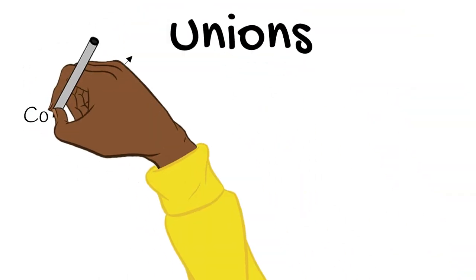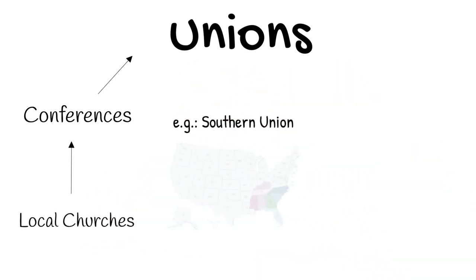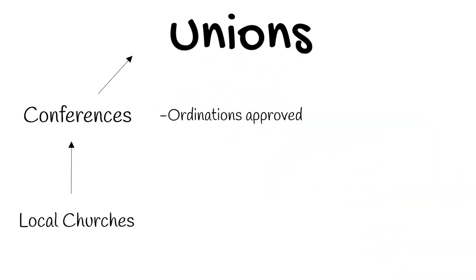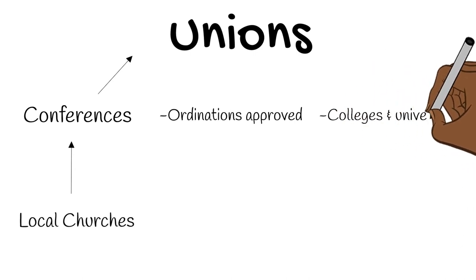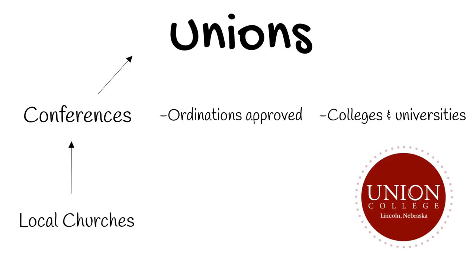Each union oversees multiple conferences within a region. For example, the Southern Union would oversee Florida, Georgia-Cumberland, Kentucky-Tennessee, Gulf States, and the Carolina Conferences. Union representatives are elected in union constituency sessions, and it's at this level where pastoral ordinations are approved. The union level is also where most Adventist colleges and universities partner — this is easy to remember with names like Union College.